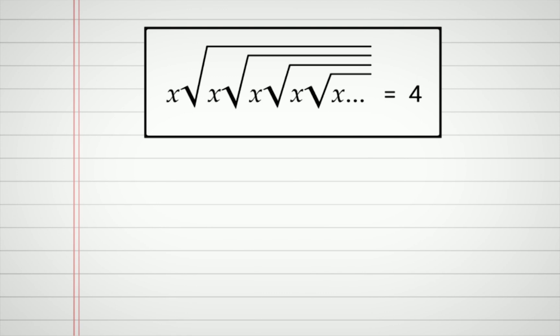So how are we going to deal with this? The key to solving these kinds of equations is to find the pattern, because obviously there is a pattern. You can see x, square root of x, square root of x, square root of x, and so on. It's a repeating pattern. Let me write it here to emphasize: there's a repeating pattern.